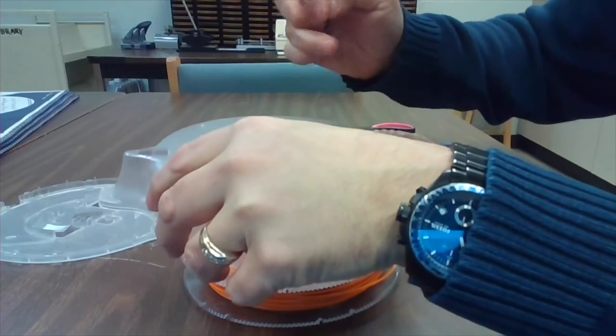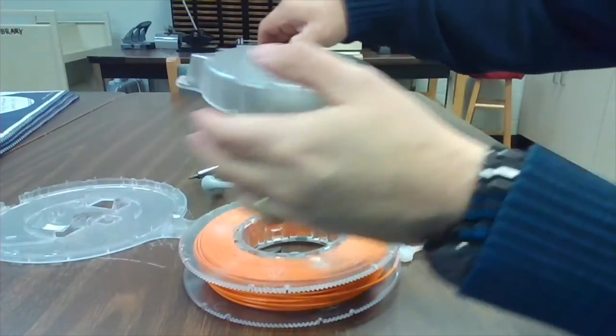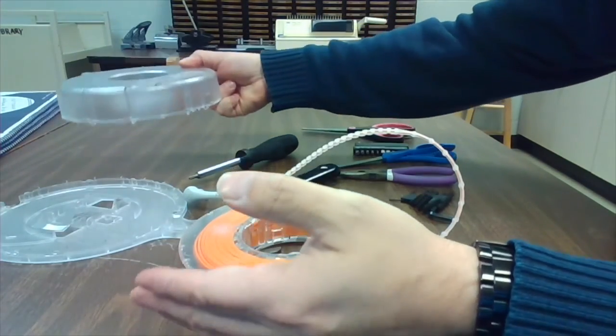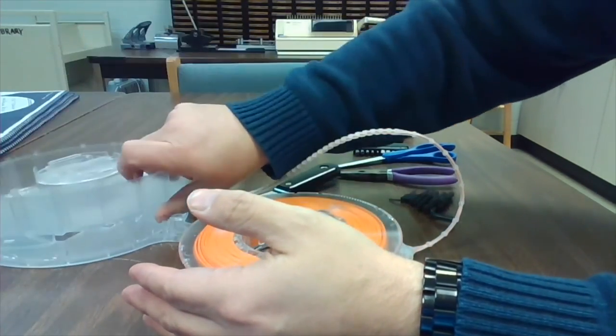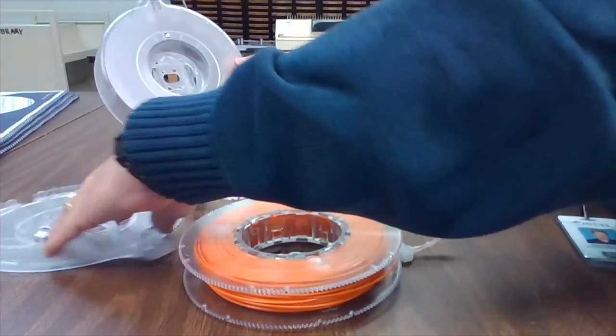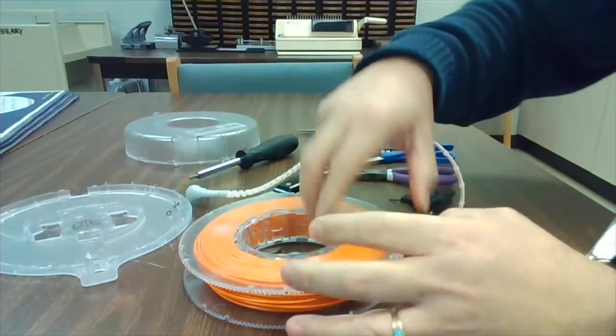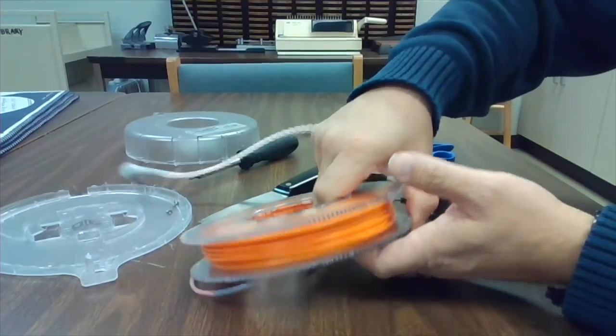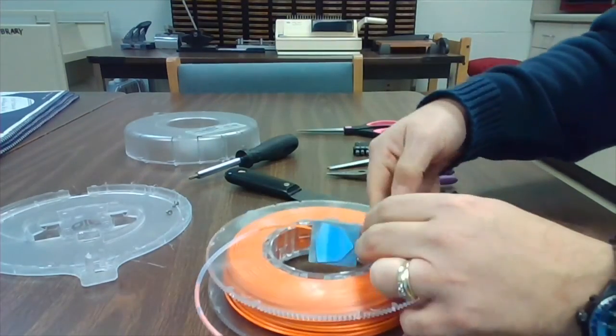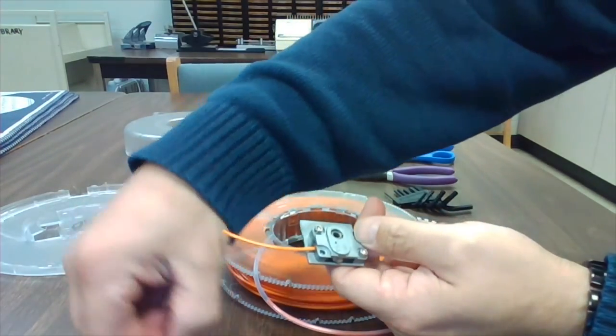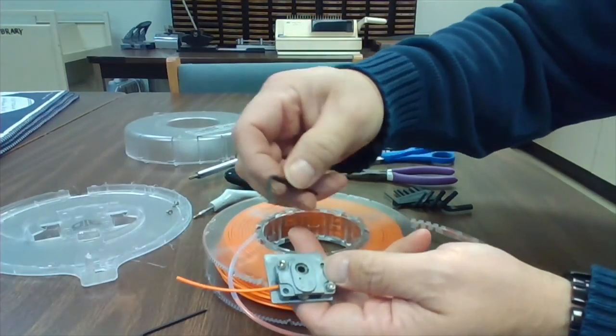There are two screws with the smallest, the 2.0, that hold the extruder and the filament tube to the outside case. Get those out, put them someplace safe, you don't want to lose them. Then there are two more that hold the two halves of the extruder together, and those have the larger 2.5 screw heads.